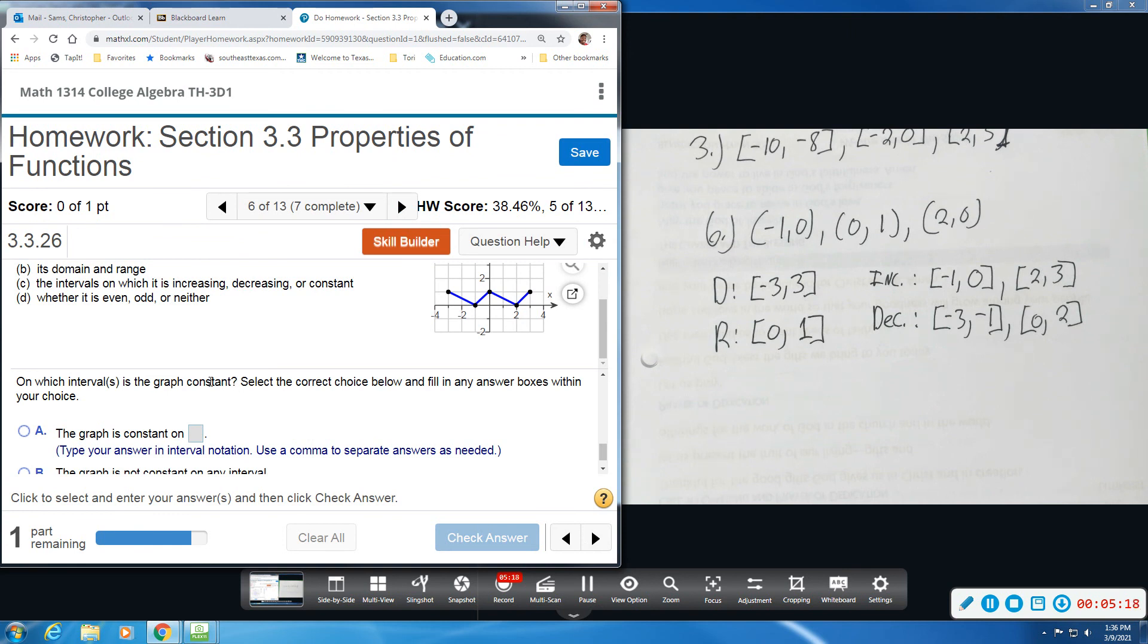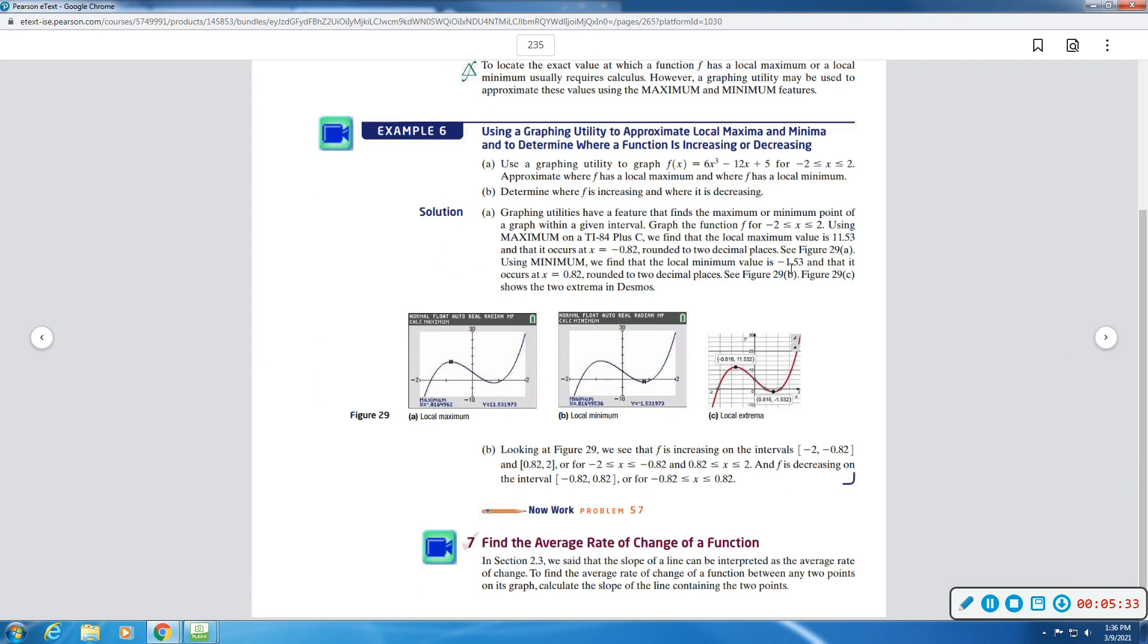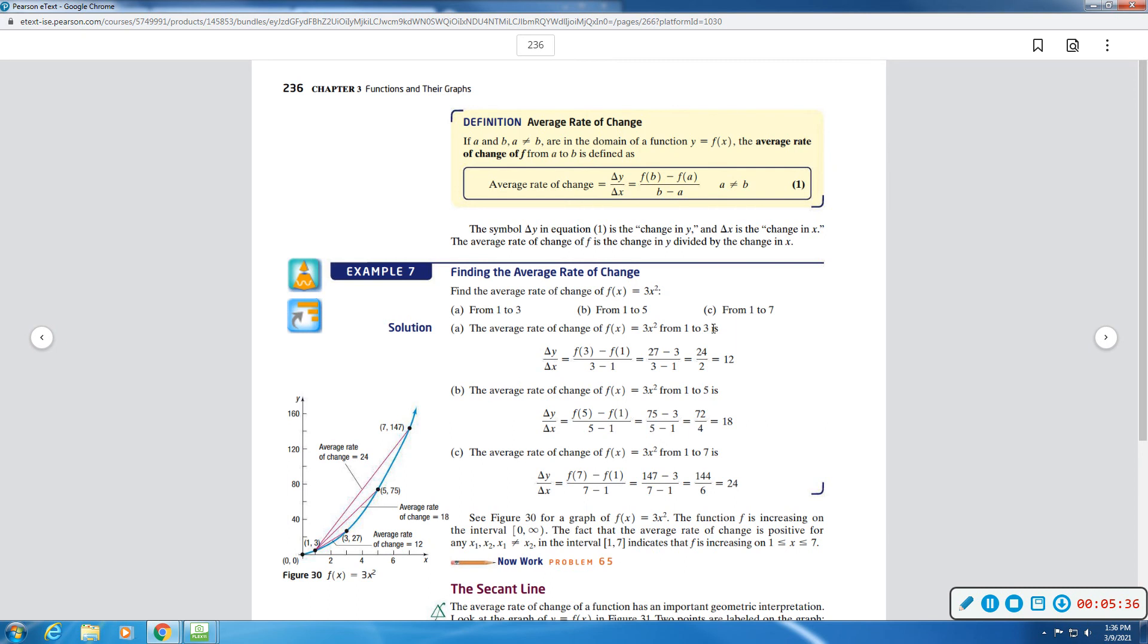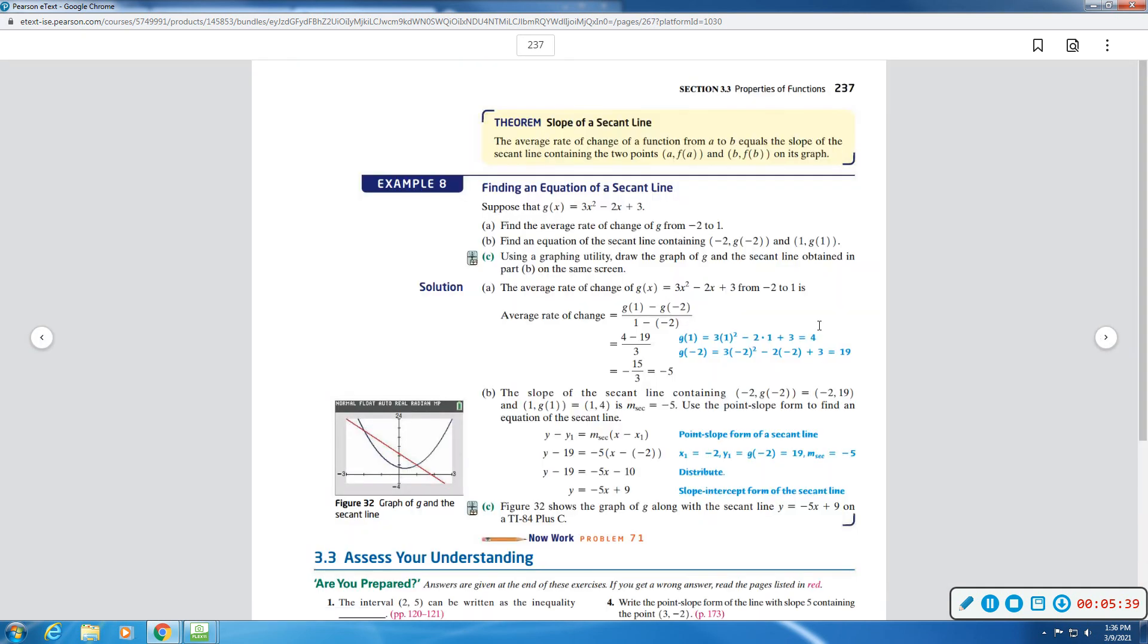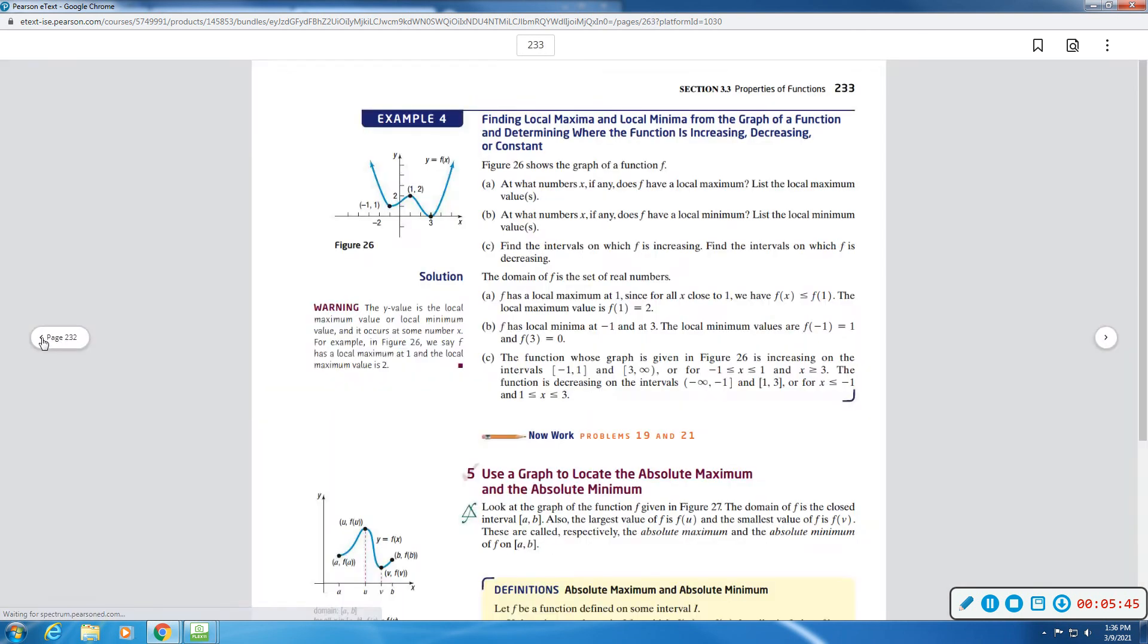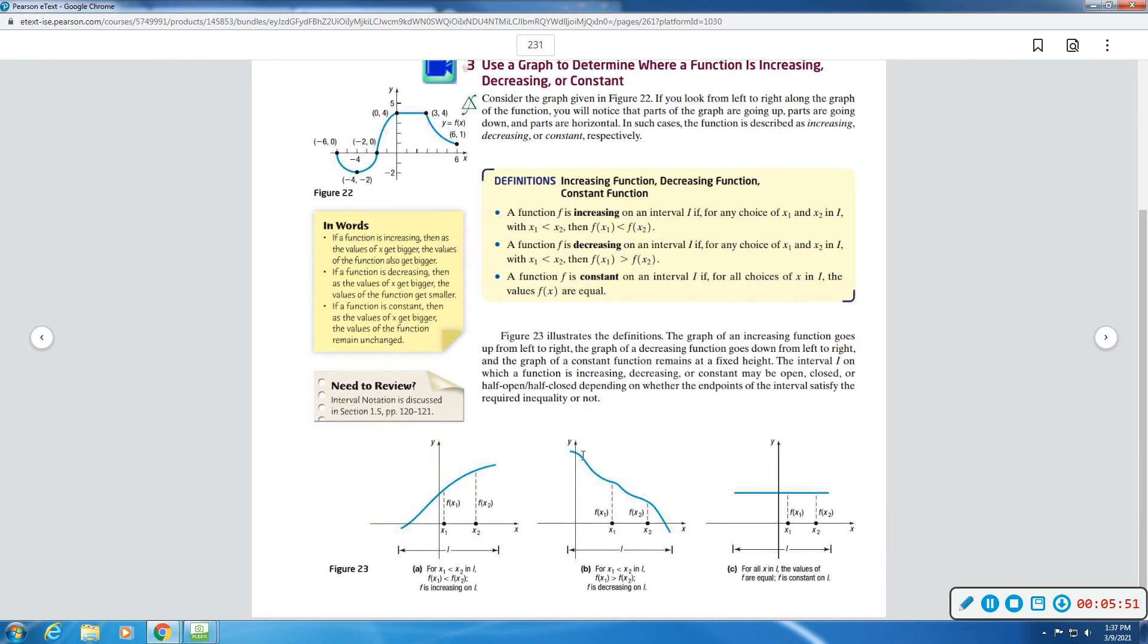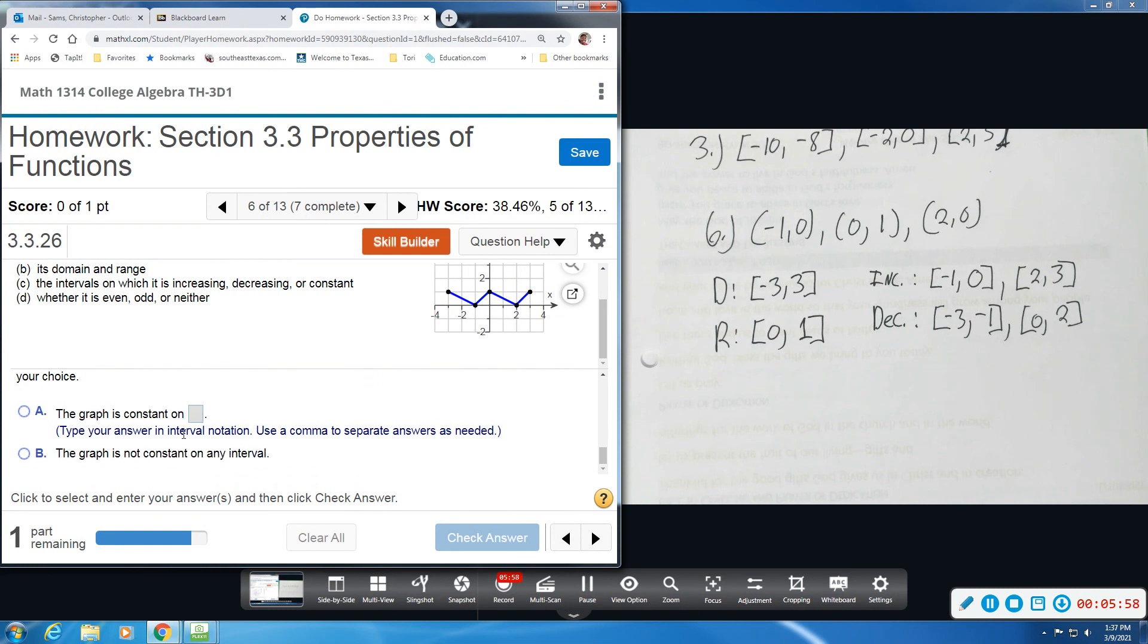Now we want to know is it constant, where the graph is constant. So constant would just be horizontal, straight across. And there's no part of this graph that is just flat across. I think we might get some images of increasing, decreasing, and constant. Yeah, increasing, decreasing, constant. So kind of what we saw beforehand, so we don't have a part that's flat across. So the graph is not constant on any interval. We will pick option B.